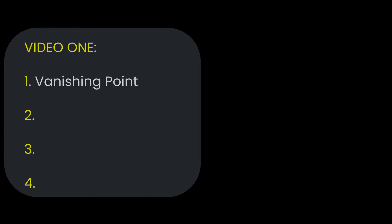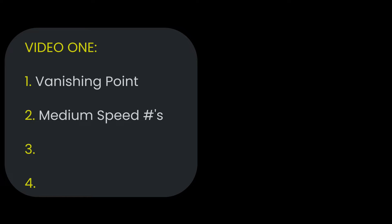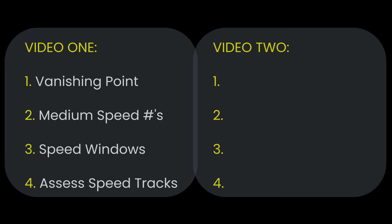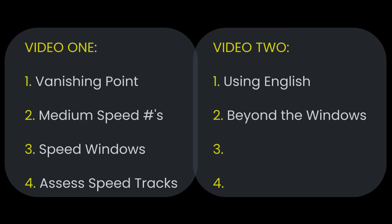There's actually too much here to cover in one video so I'm going to split this into two videos. In this video, I'll explain the concept of a vanishing point, reveal my medium speed track line numbers, teach you how to remember the extremes you can cheat in either direction using fast and slow speed, and demonstrate how to identify the correct speed track in live play. In video two, I'll teach how to widen the speed window using measurable amounts of English, review things to keep in mind when balls are close to or far from the rail, or when using this system to kick at a ball.